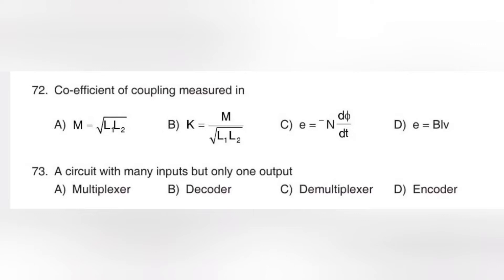L1 and L2 are the inductances. It is the measure of magnetic effect passing between them. EMF is equal to BLV, where B is the magnetic flux, L is the length, and V is the voltage. Also E = dΦ/dt.